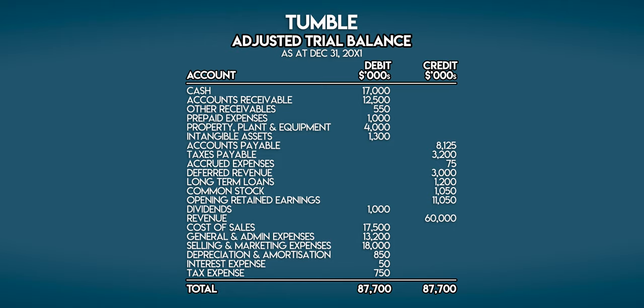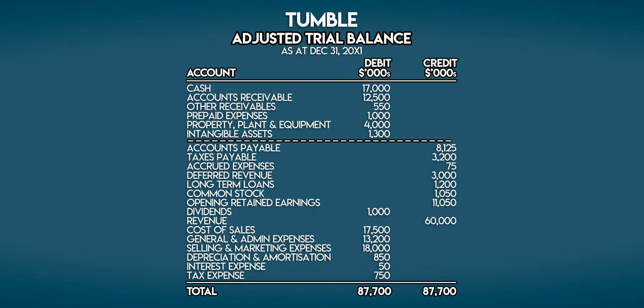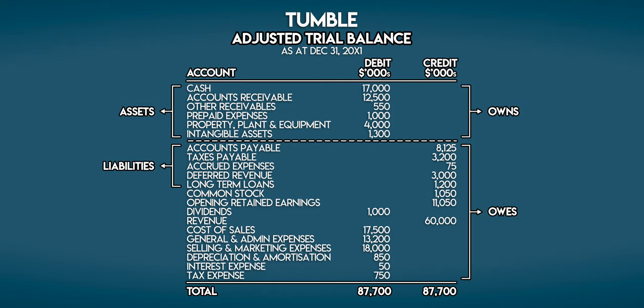Accounts in a trial balance are usually arranged in a pattern. Above this line, we have the stuff that Tumble owns — its assets. And below the line, we have the stuff that Tumble owes — its liabilities and equity. We also have its revenue and expense accounts, which we used last time to make the income statement.